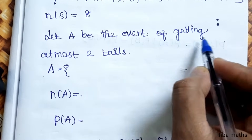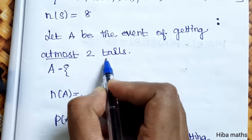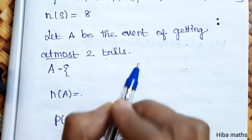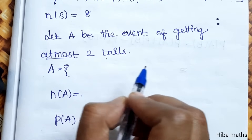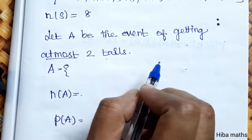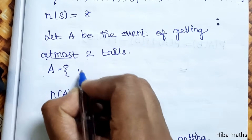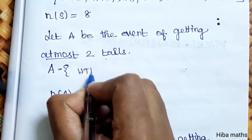Let A be the event of getting at most 2 tails. 'At most 2 tails' means there can be fewer than 2 tails, but not more than 2 tails. So we include outcomes with 0, 1, or 2 tails.